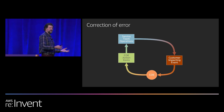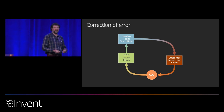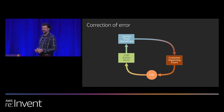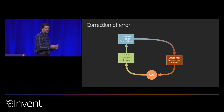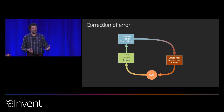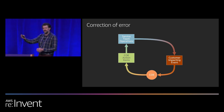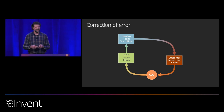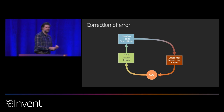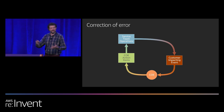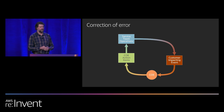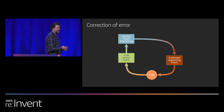If we draw a flowchart of where the correction of error fits into the lifecycle of a customer event, it looks like this: a service team is operating their service when a customer-impacting event happens. After mitigating that event and restoring customer access, they write the correction of error and take a number of COE action items. They'll modify the source code, change the way they deploy software, change their runbooks and monitoring. These are the kinds of things that service teams do when they take corrective actions.